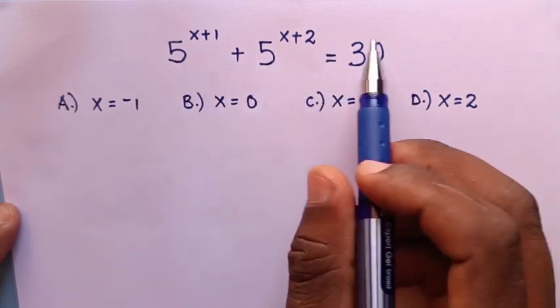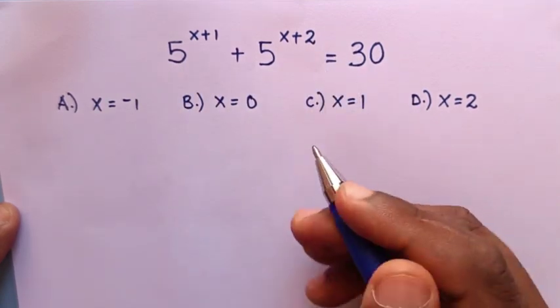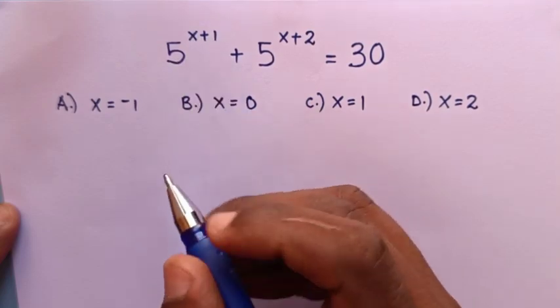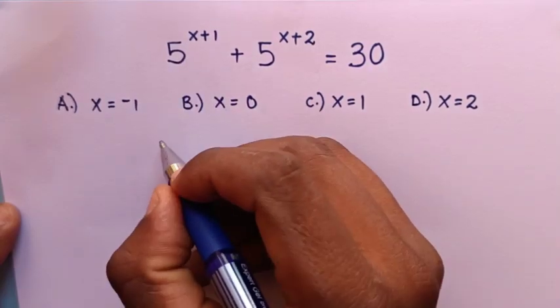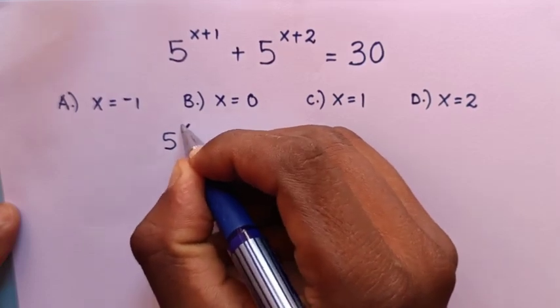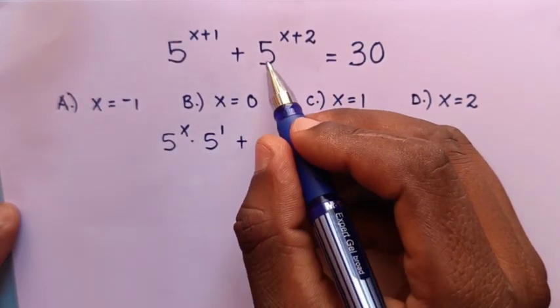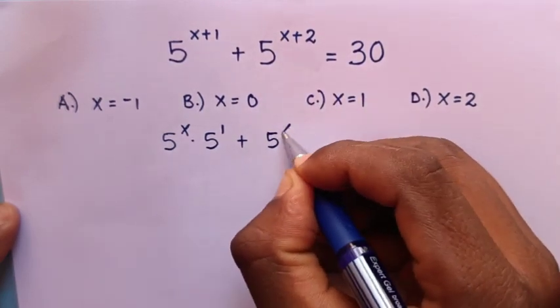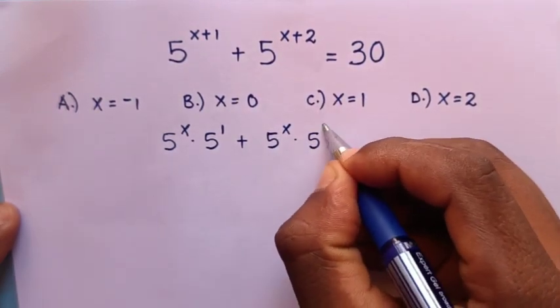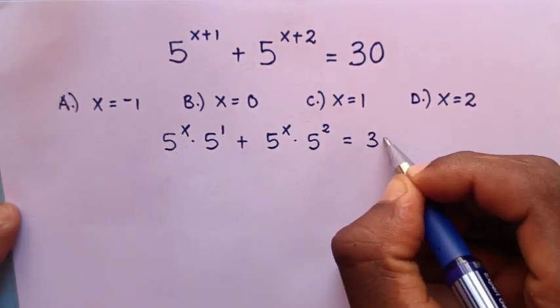From this equation, we are going to find the value of x. 5 power x plus 1 is the same as multiplication of exponents, which is 5 power x times 5 power 1, plus 5 power x plus 2, which is 5 power x times 5 power 2, equals 30.